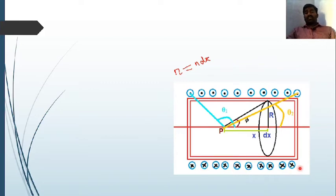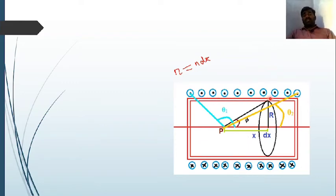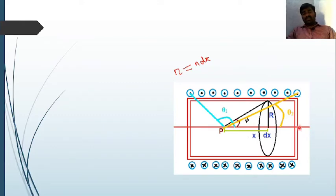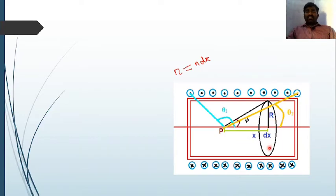The cross mark shown indicates electric current passing into the page, and the dot symbol represents the electric current coming out of the page. This convention is used because the current produces a magnetic field inside the axis of the solenoid.